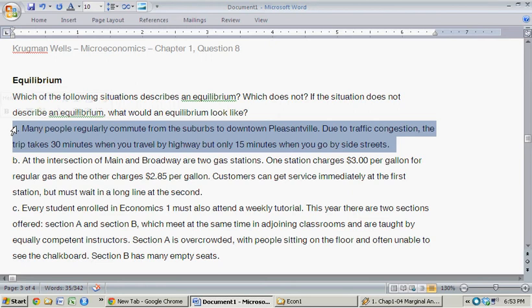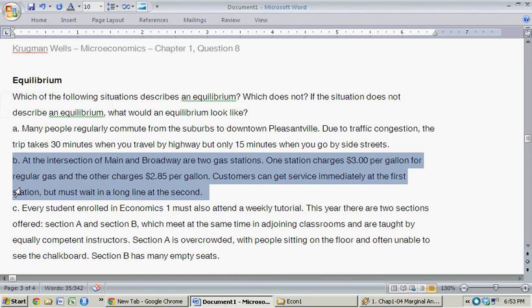So an equilibrium in this situation would be such that enough of those highway drivers switch over to the side streets such that the time of travel via highway and side street is the same. So maybe 20 minutes each or something along those lines.